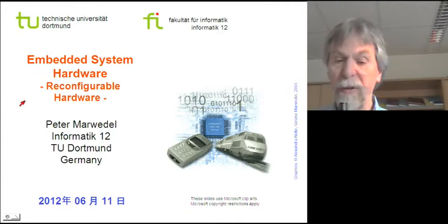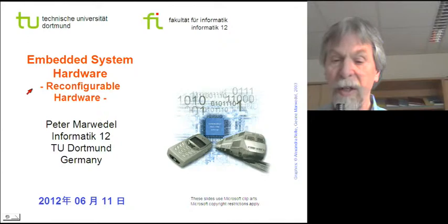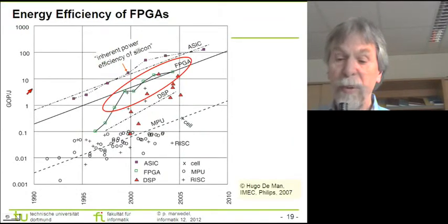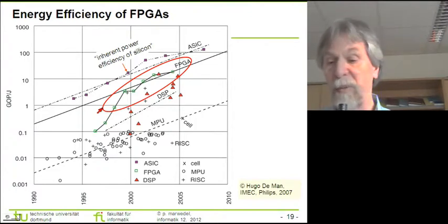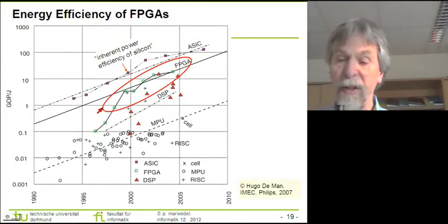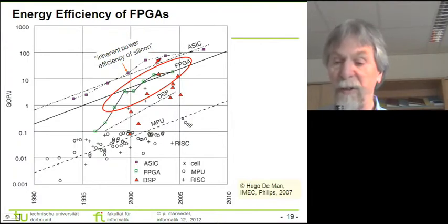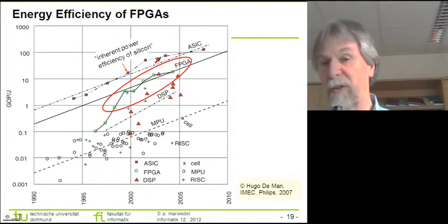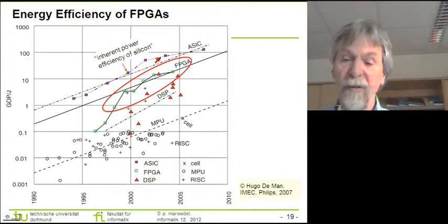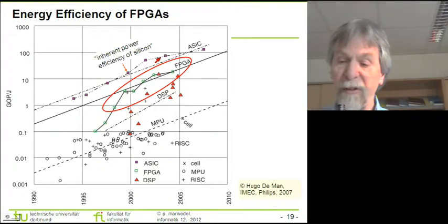Next I'd like to talk about reconfigurable hardware. Reconfigurable hardware has already been included in this energy efficiency diagram. With so-called field programmable gate arrays, we can actually achieve a very good energy efficiency. Field programmable gate arrays can bring us pretty close to the energy efficiency of ASICs. So I think it's interesting to look at this technology and to see what these FPGAs can do for us.